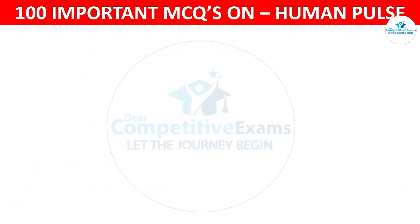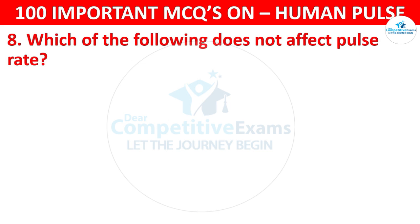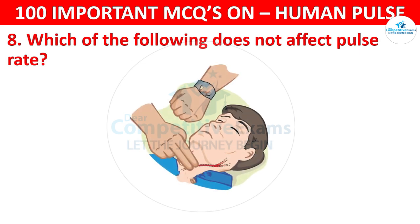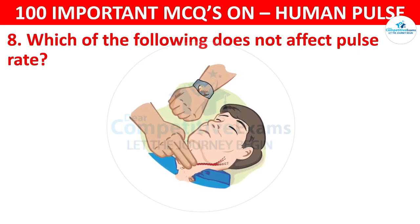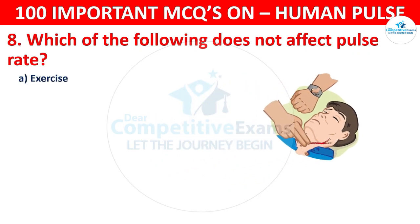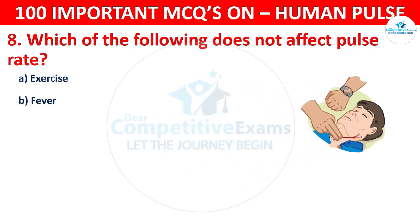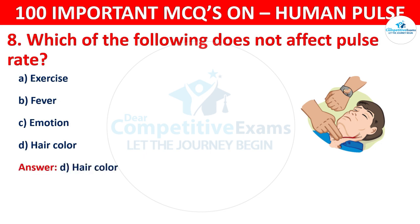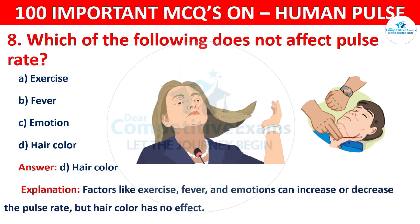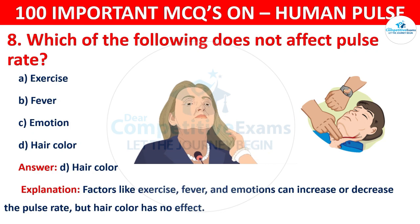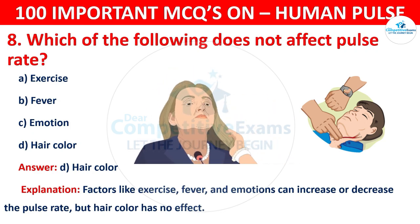Question number 8: Which of the following does not affect pulse rate? The options are: Exercise, Fever, Emotions, or Hair color. The correct answer is D, that is hair color. Factors like exercise, fever, and emotions can increase or decrease the pulse rate, but hair color has no effect on it.